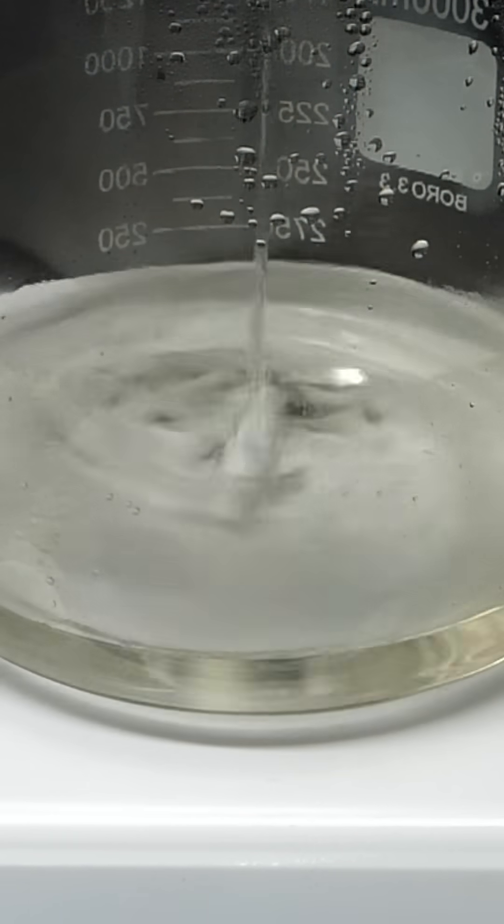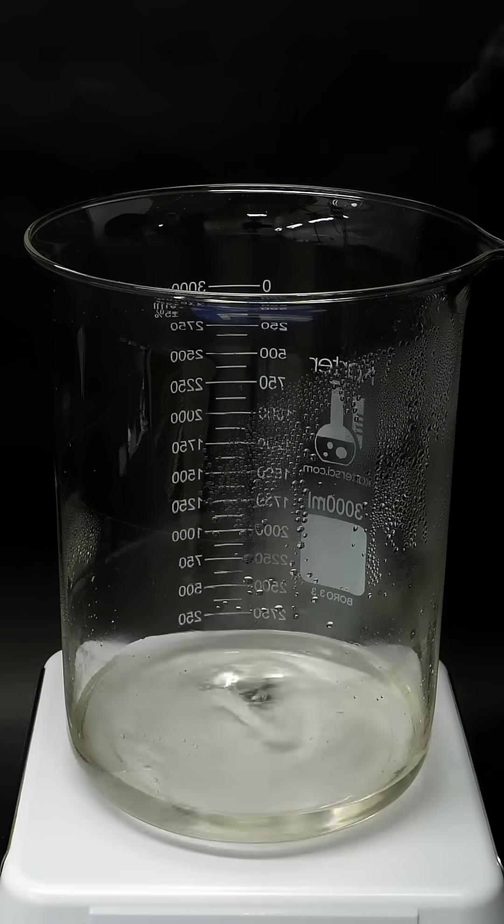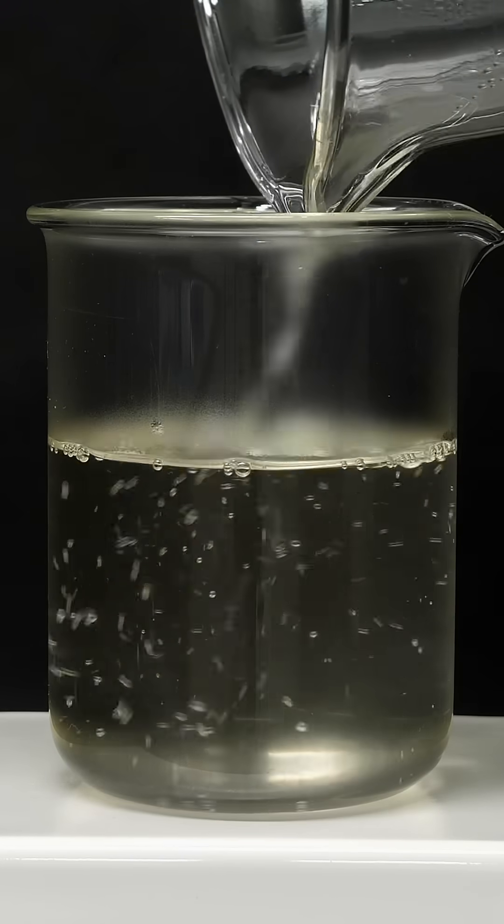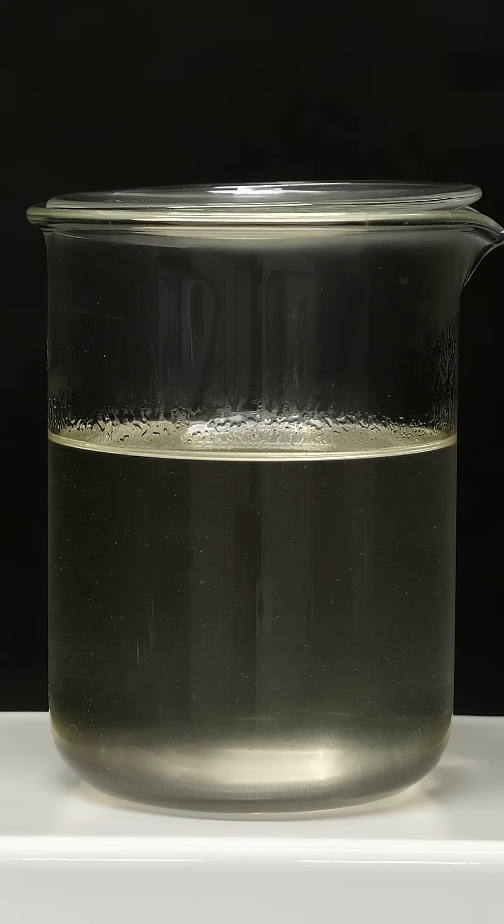So now, all I have to do is add a small amount of vinegar, and I can finally take it off the hot plate. Then, what I have to do next is just pour it all into a smaller beaker, loosely cover the top, and wait for it to cool down.